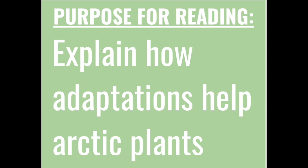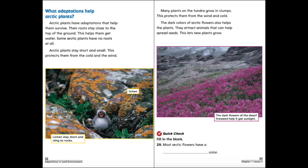Our purpose for reading today is to be able to explain how adaptations help arctic plants. Arctic plants have adaptations that help them survive. Their roots stay close to the top of the ground — this helps them get water. Some arctic plants have no roots at all. Annual plants stay short and small, which protects them from the cold. Many plants on the tundra grow in clumps, which protects them from the wind and cold.